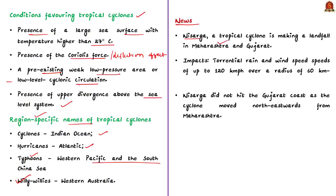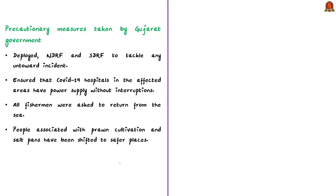Cyclone Nisarga made landfall in Raigad district of Maharashtra with torrential rains and wind speed of up to 120 kilometers per hour for a radius of about 60 kilometers. The cyclone was expected to hit the Gujarat coast but moved northeast towards Maharashtra. As a precautionary measure, the Gujarat government shifted over 60,000 people living in low-lying vulnerable areas in South Gujarat to safer places, and deployed several teams of NDRF and SDRF.